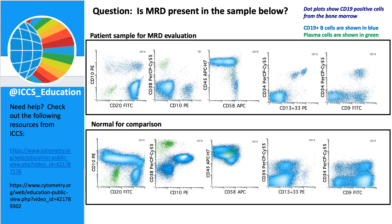Here I have CD19-positive B cells highlighted from a patient sample at the top, which was submitted for MRD evaluation, and at the bottom we have a normal regenerating marrow for comparison. The question is: is there MRD present in this sample? I'd like you to take a look at the patient sample, compare it to the normal sample, and make a determination of whether or not you see MRD present. This might be a good time to pause the video to give yourself a chance to look for the abnormal population. Go ahead and pause.